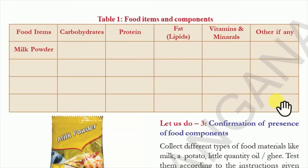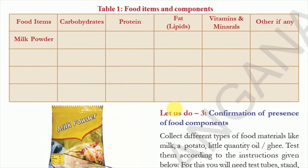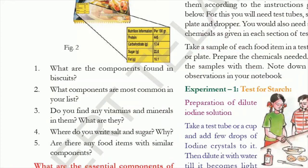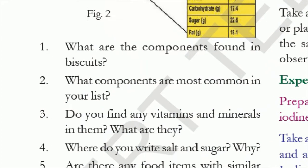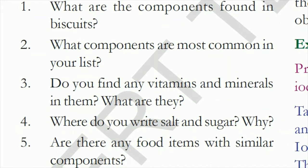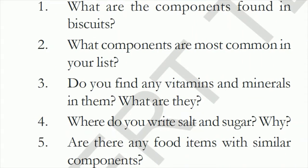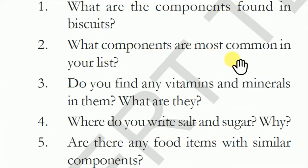Listen carefully — these activities are very important for your subject. After completing the table, you need to answer five questions. The first question is: what are the components found in biscuits? Write the components shown in the tabular column. The second question is: what components are most common in your list? Write all components that appear in every column — for example, carbohydrates appear in every column.